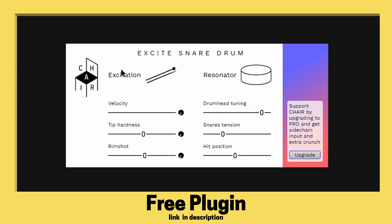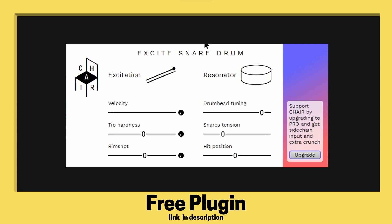The first physical modeling plug-in we're going to check out is EXC!TE Snare, created by the Center for Haptic Audio Interaction Research, or CHAIR for short. This one models a snare drum. We have a lot of controls: velocity changes how the incoming MIDI velocity affects the plug-in, tip hardness changes the hardness of the simulated stick hitting the drum, and rim shot is when you hit the drum and the edge of the stick hits the rim.